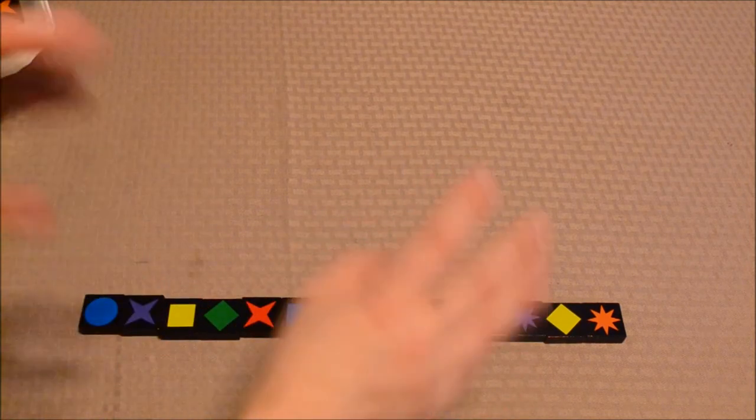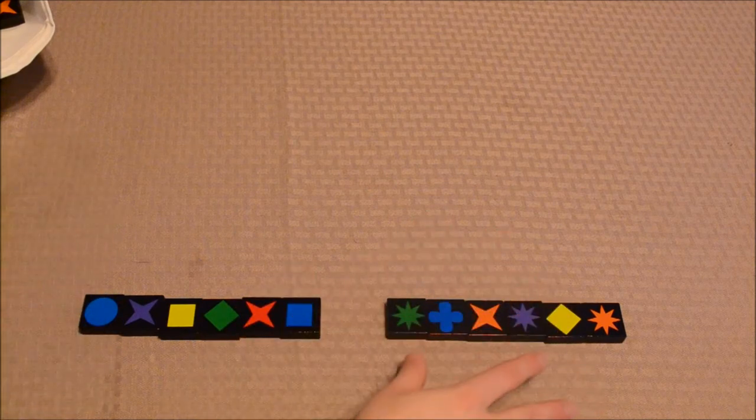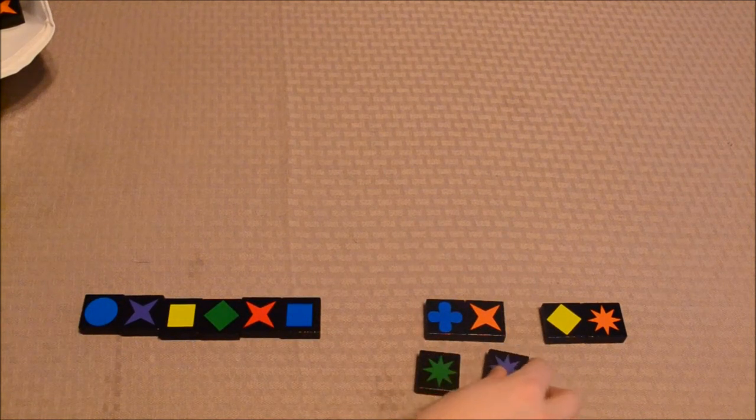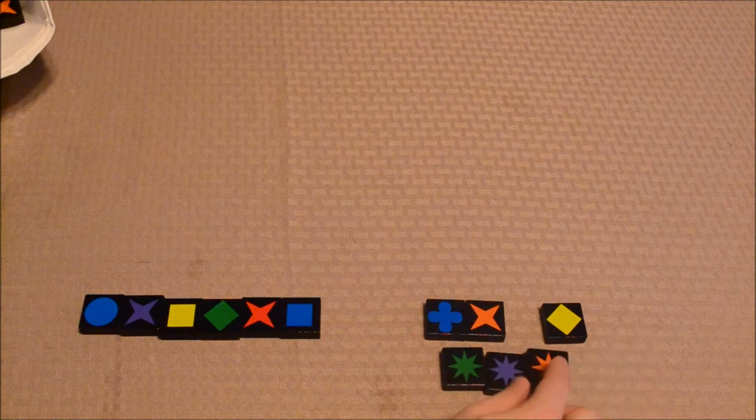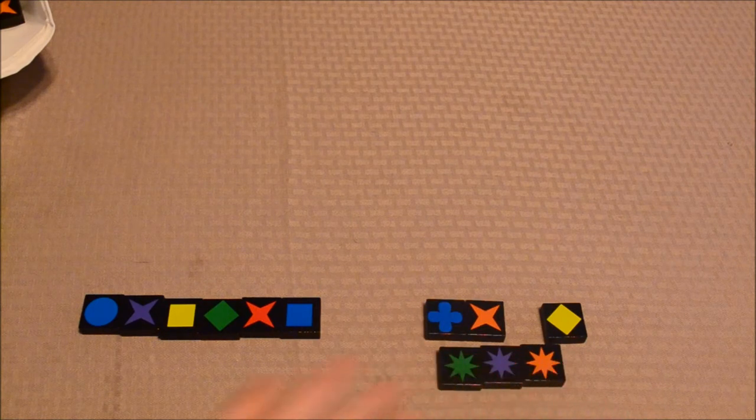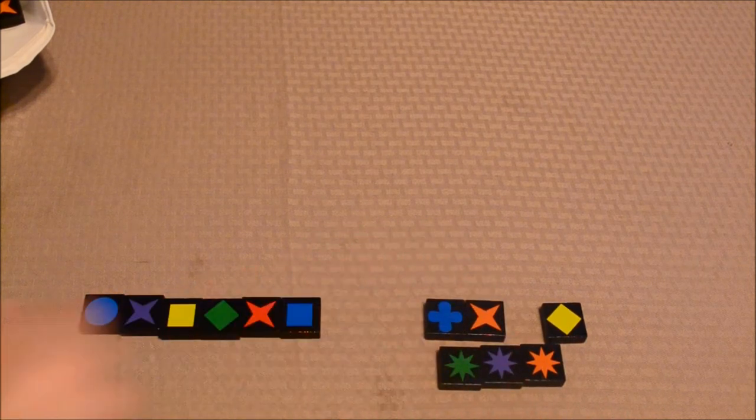Now this player over here just in glancing I can tell that this player is gonna win because this player has three of these eight point stars all of different colors. Again you can't have any duplicates. So this player would be allowed to make the first move of the game.